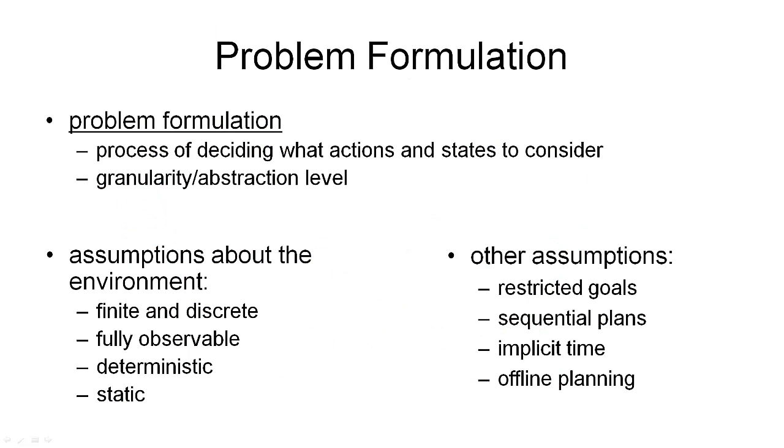So what you have just seen is that problem formulation is itself a complex problem. And it's the problem of defining the four components of a search problem. In problem formulation, we have to decide what actions we want to consider and what states we want to consider in the world. Probably the most difficult decision there is: at what level of abstraction are we looking at the world? What detail do we want to take into account and what detail do we want to omit?